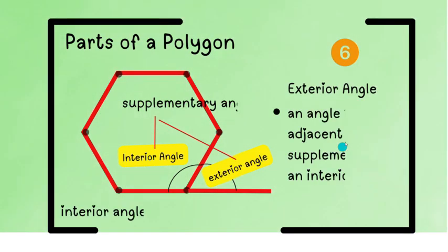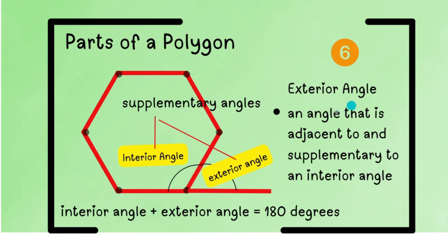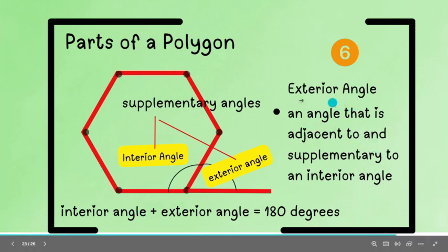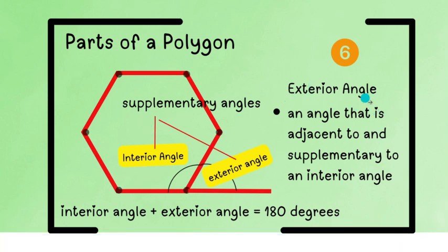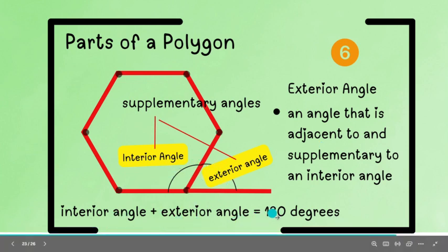Then, we also have exterior angles. So, obviously, ang exterior ay nasa labas. Ngunit, ito ang lagi natin isipin na ang exterior angle at saka yung interior angle, they are supplementary angles. Dahil, when you add them, they will make up 180 degrees.